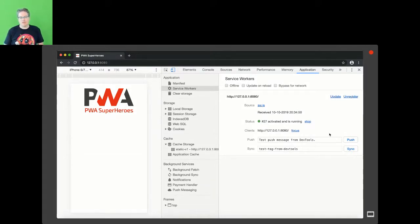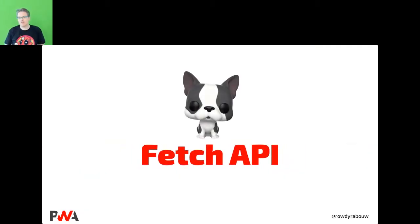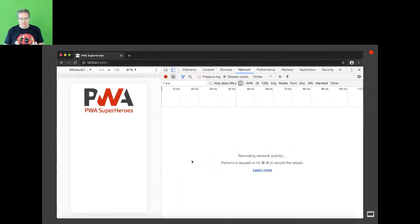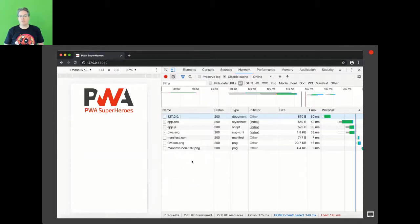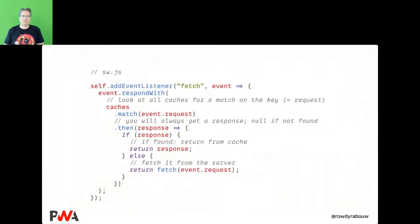Now we want to use that cache. We add a fetch event listener to the service worker. We look through all caches and try to match the requested URL. If we find it, we return it from the cache; otherwise we still fetch it from the server.